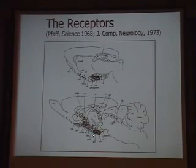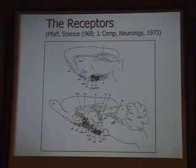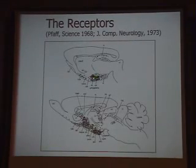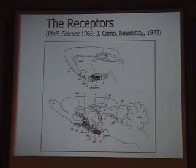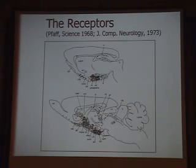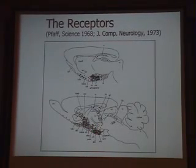We discovered in the rat brain a limbic hypothalamic system of sex hormone-binding neurons — in the hypothalamus right over the pituitary gland, and in the phylogenetically ancient portions of the forebrain, for example the basal forebrain, the septum, and the amygdala — the limbic system. This limbic hypothalamic system was discovered in rat brain, but it turned out to be universal: fish, frogs, lizards, birds, mammals, right up through human beings. From the fish to the philosopher, you can see sex hormone-binding cells in the hypothalamus and limbic system.